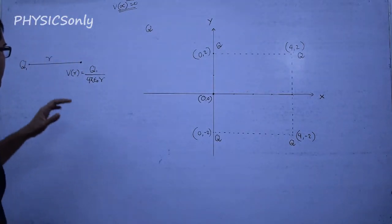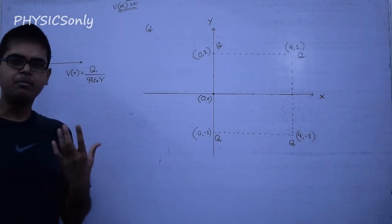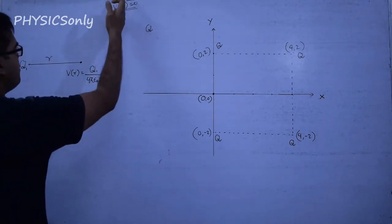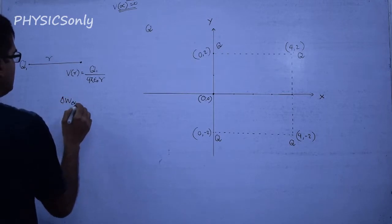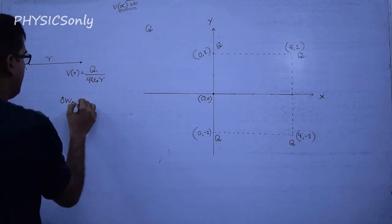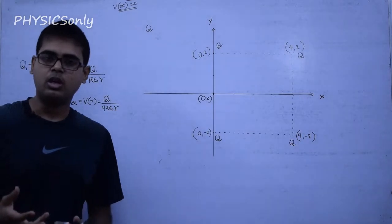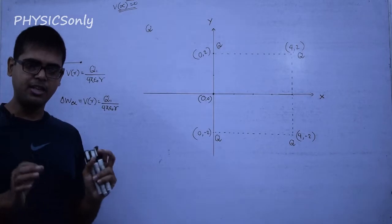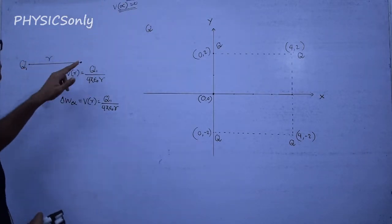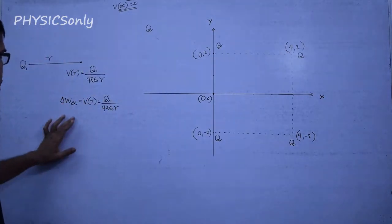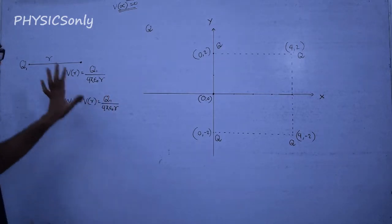So the potential for Q₁ is Q₁ / 4πε₀r at a distance r from the charge. What does it mean? It means that if you bring a unit positive charge from infinity to that point, the external work done required is this much. That is: the potential at a point equals the external work done to bring a unit positive charge from infinity to that point. I suggest you revisit your textbook and understand this potential definition clearly.